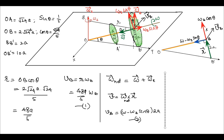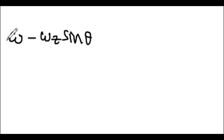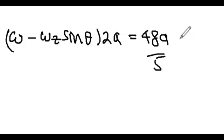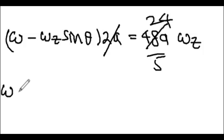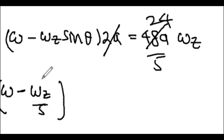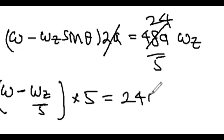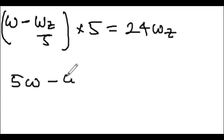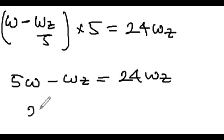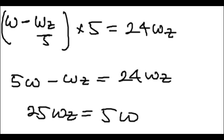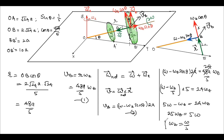Equating equations 1 and 2: (omega − omega_z·sin θ)·2a = (48a/5)·omega_z. With sin θ = 1/5, we get 2a(omega − omega_z/5) = 48a·omega_z/5, which simplifies to 5·omega − omega_z = 24·omega_z, giving 25·omega_z = 5·omega. Therefore omega_z = omega/5, confirmed by this second method.